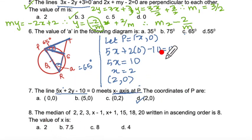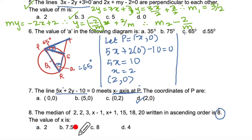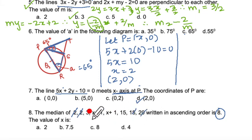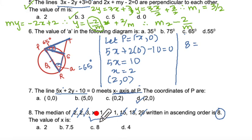Question 8: the median of values written in ascending order is 8; find x. There are 8 values, so the median is the average of the 4th and 5th terms: (n/2)th term and (n/2 + 1)th term divided by 2. So 8 = (x + x)/2, which simplifies to find x.